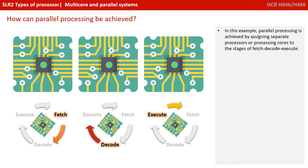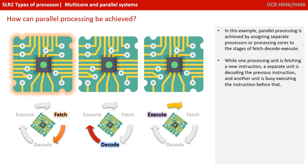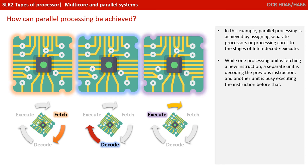In this example, parallel processing is being achieved by assigning separate processes or processing cores to different stages of the fetch, decode, and execute cycle. While one processing unit is fetching a new instruction, a separate unit is decoding the previous instruction, and another unit is busy executing the one before that.